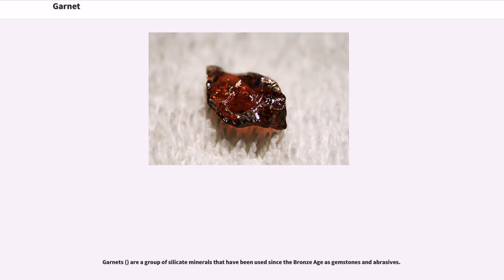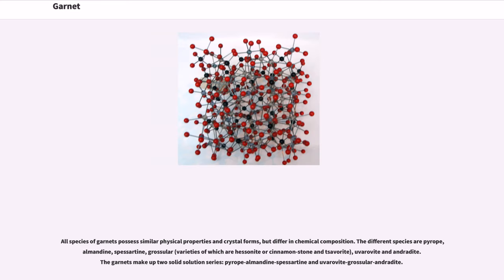Garnets are a group of silicate minerals that have been used since the Bronze Age as gemstones and abrasives. All species of garnets possess similar physical properties and crystal forms, but differ in chemical composition.